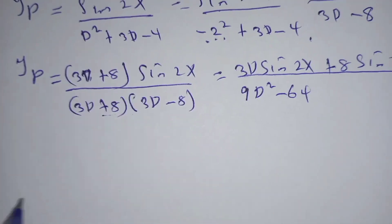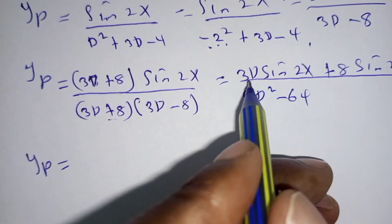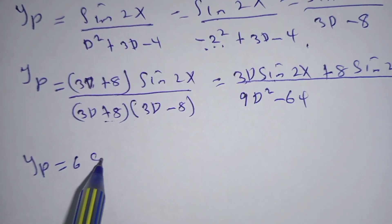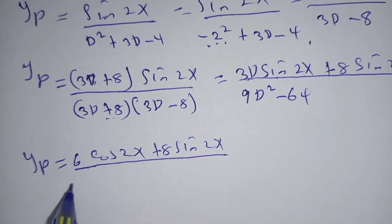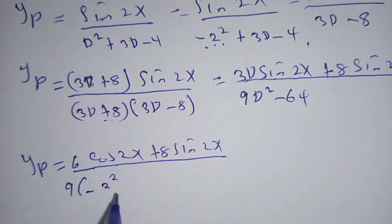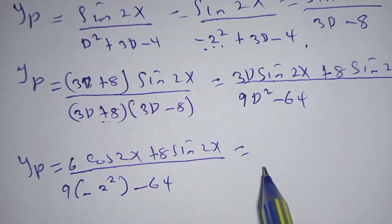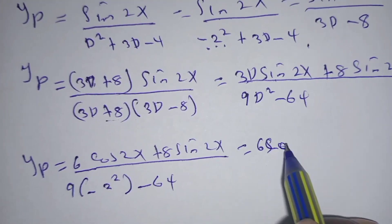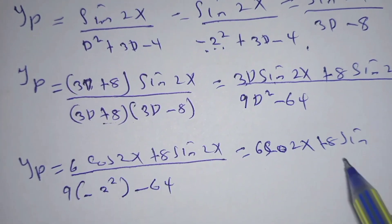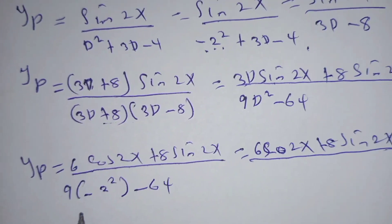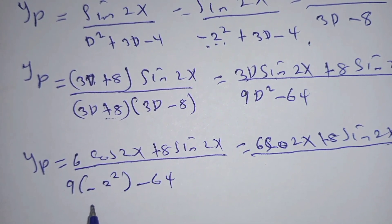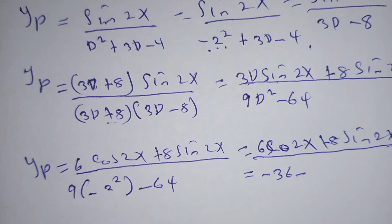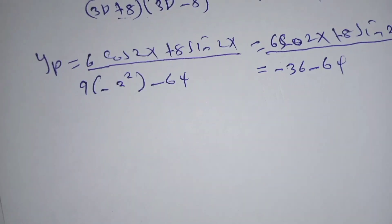Since D means differentiate, 3D·sin(2x) gives 6·cos(2x). So the numerator is 6·cos(2x) plus 8·sin(2x). In the denominator, we substitute D squared equals negative 4: 9 times negative 4 gives negative 36, minus 64 gives negative 100.